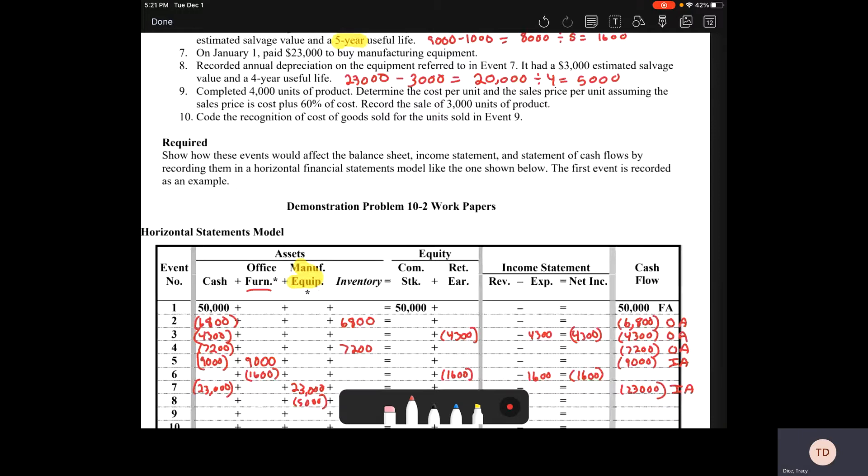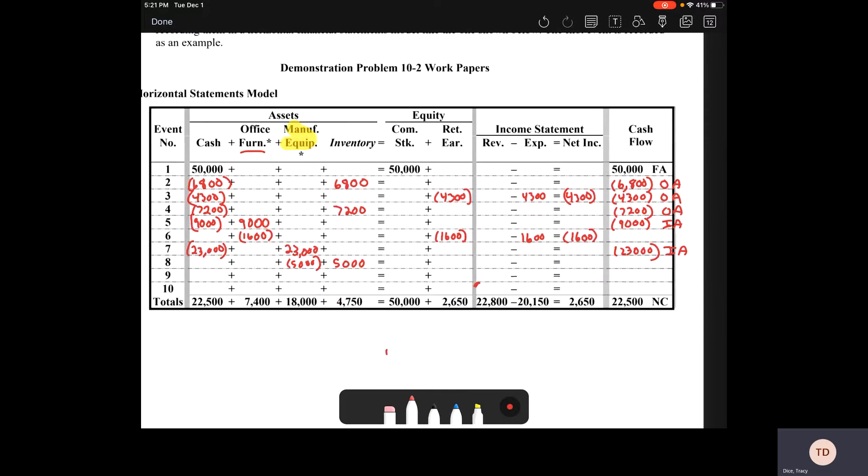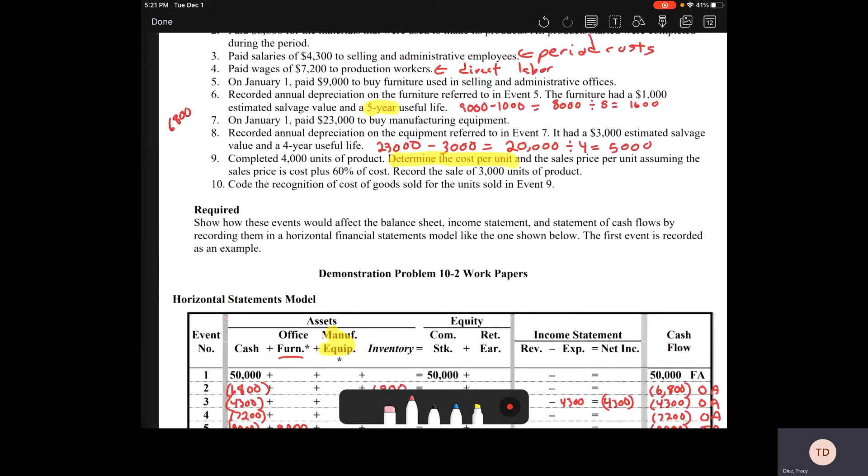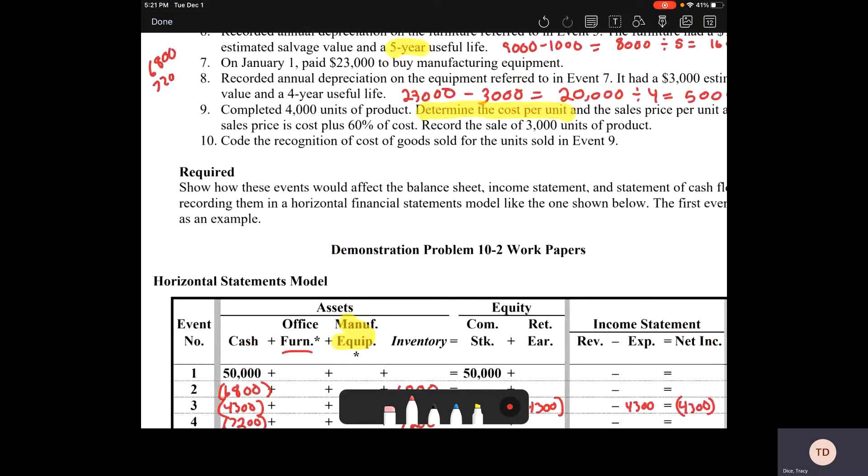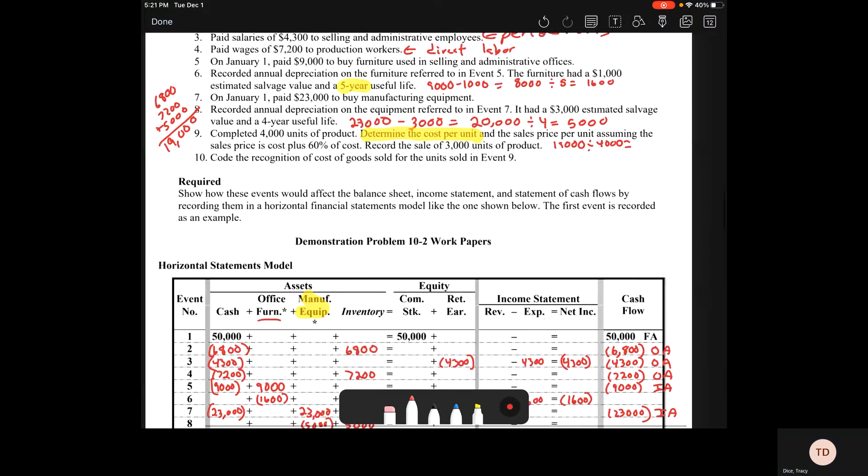Number nine. We completed 4,000 units of product. Determine the cost per unit. First thing we've got to do is figure out how much we spent on our units. Our product costs are the $6,800, the $7,200, and the $5,000. We've got to add those up. $6,800, $7,200, and $5,000 should be $19,000. So we spent $19,000 to complete 4,000 units. Cost per unit is $19,000 divided by 4,000. That is $4.75 per unit.